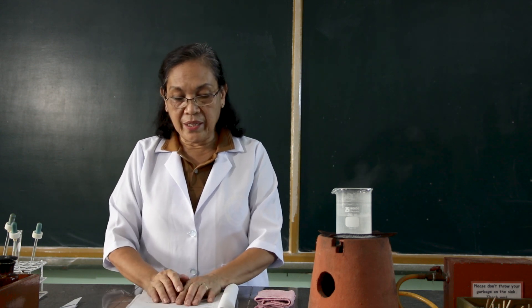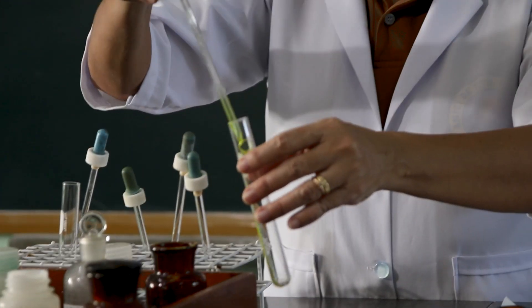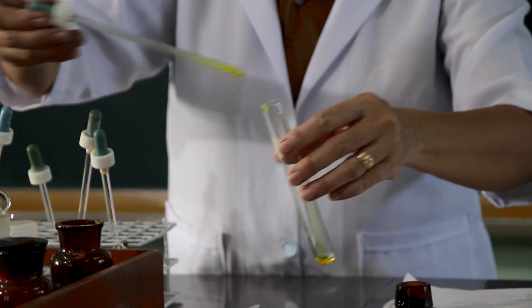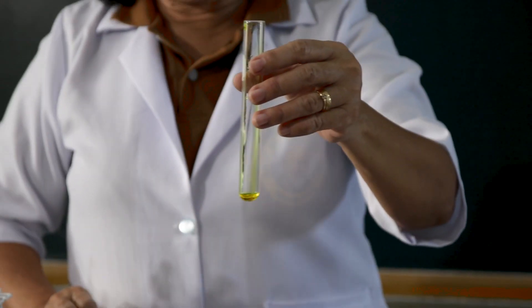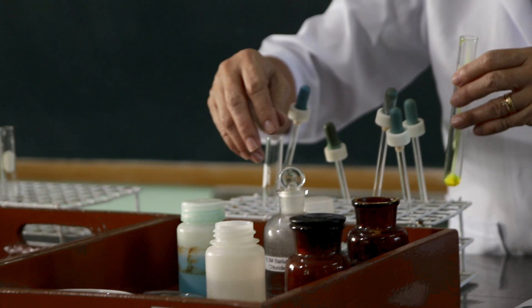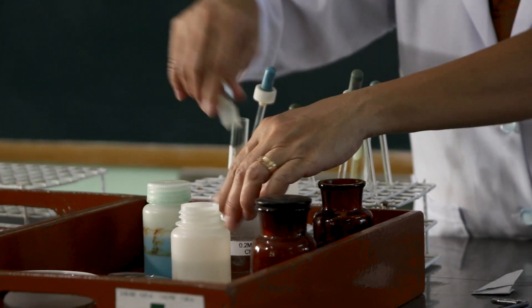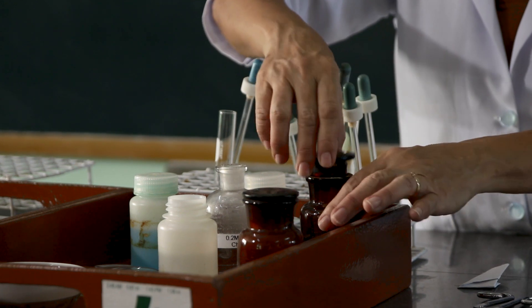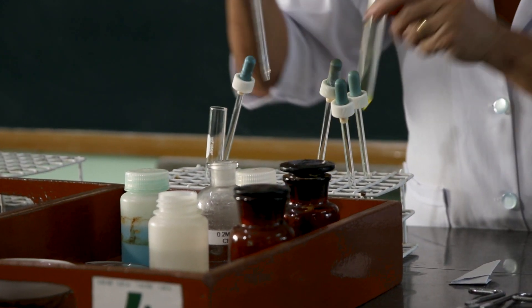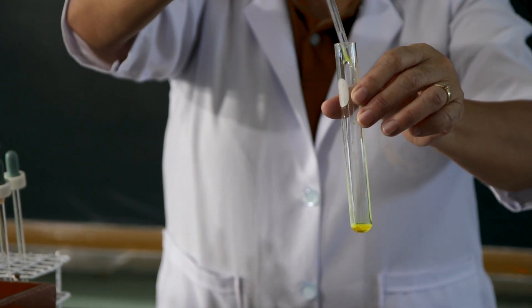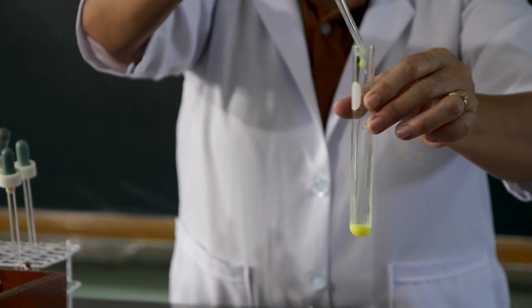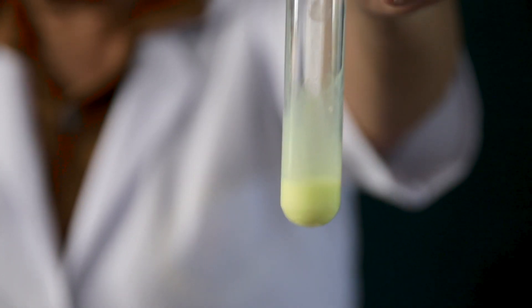Then we will prepare a salt by a reaction between two other salts. This time we are going to use the potassium chromate and the barium chloride. We will add the potassium chromate with the barium chloride. I want you to observe what happens.